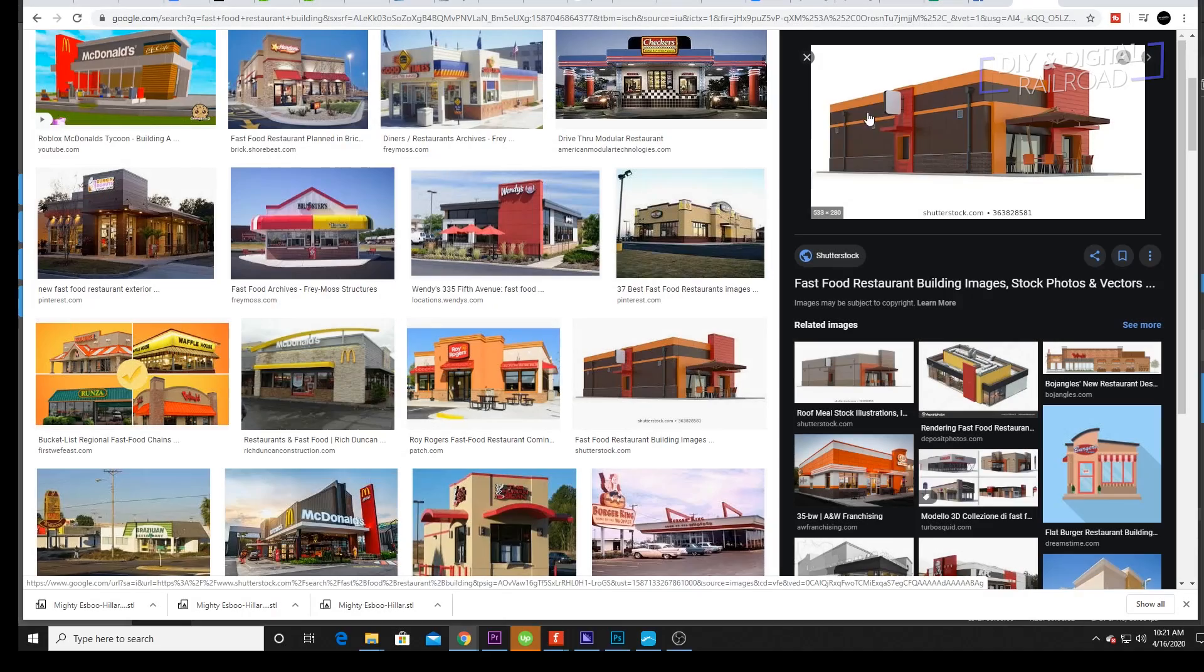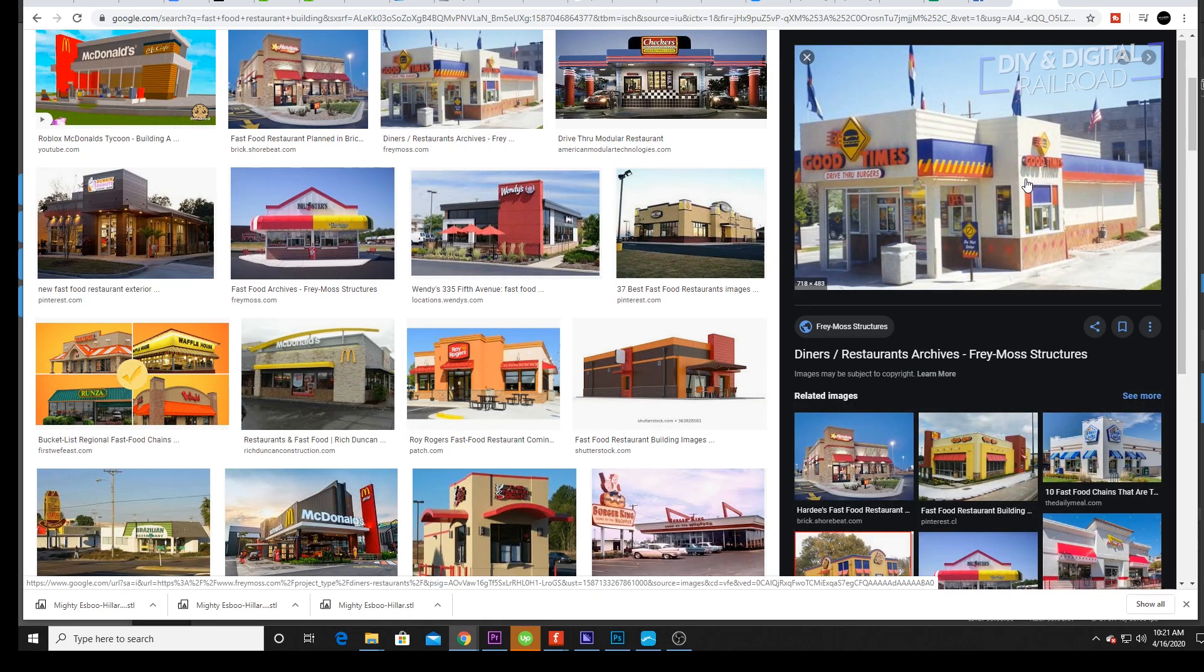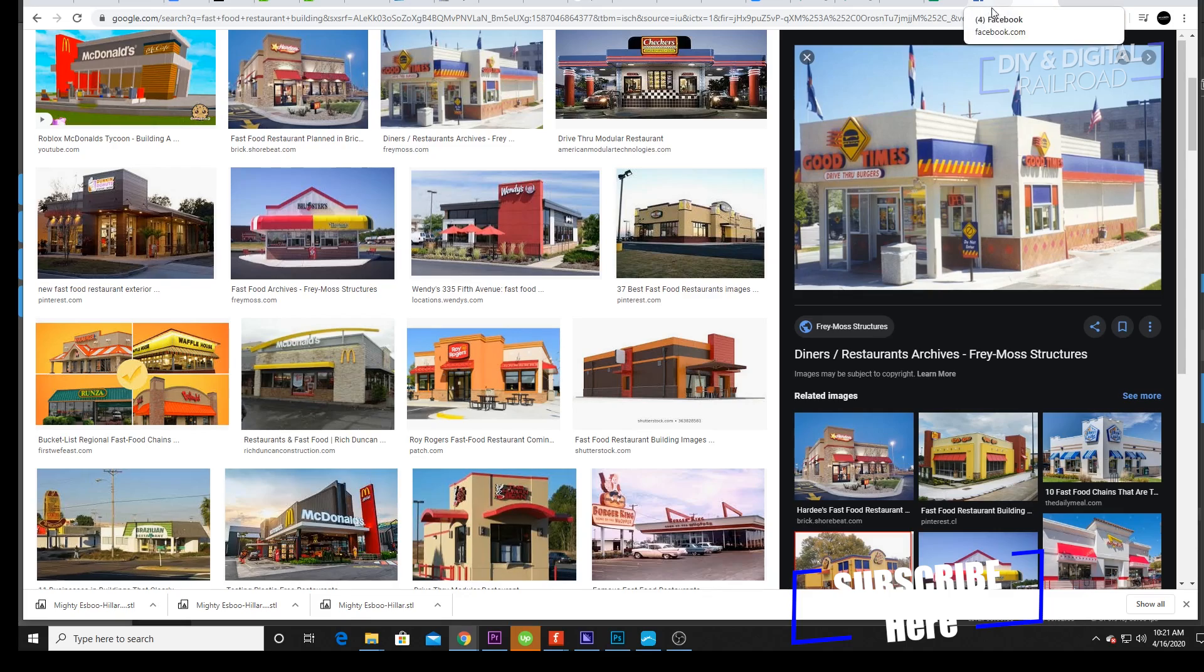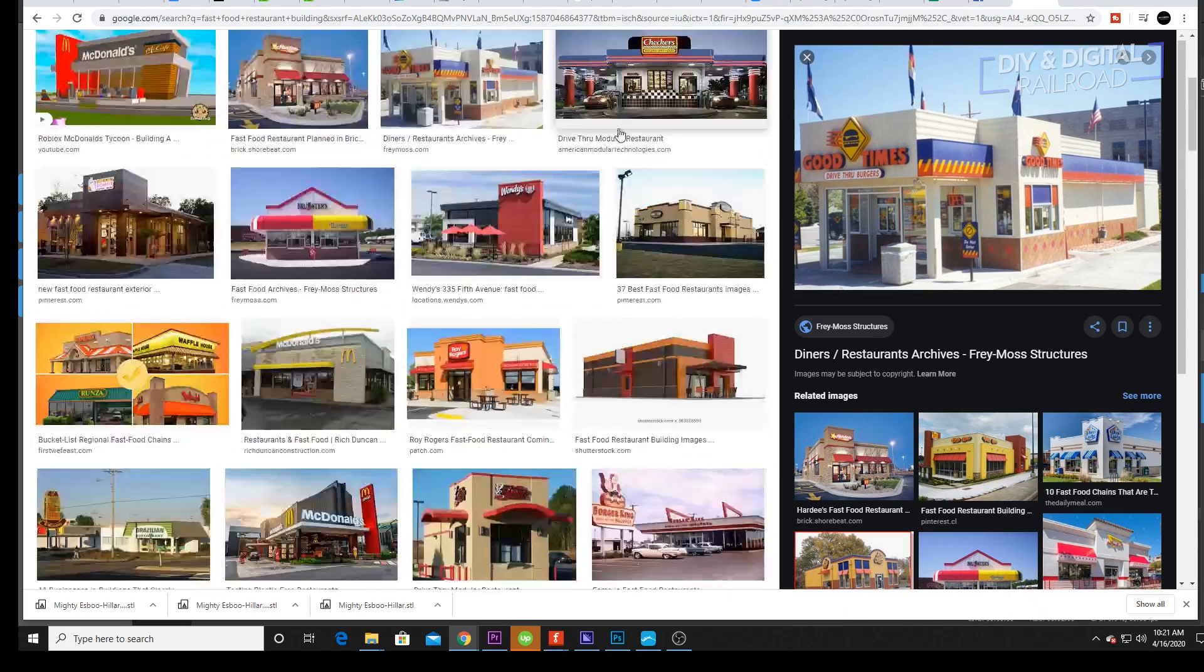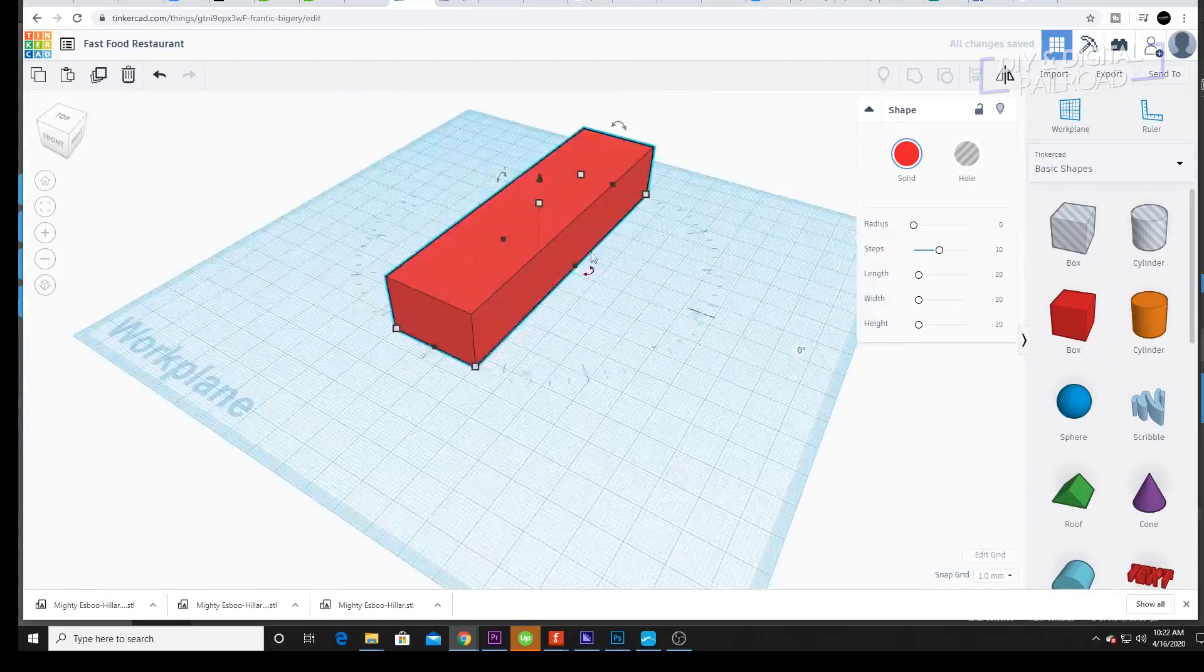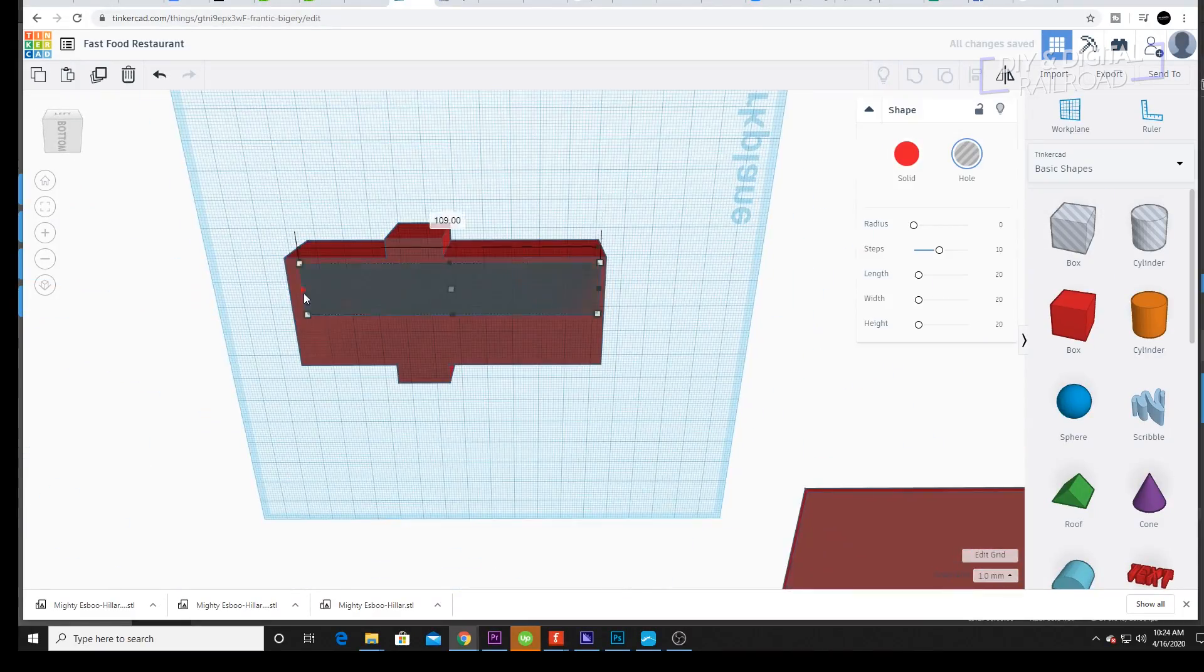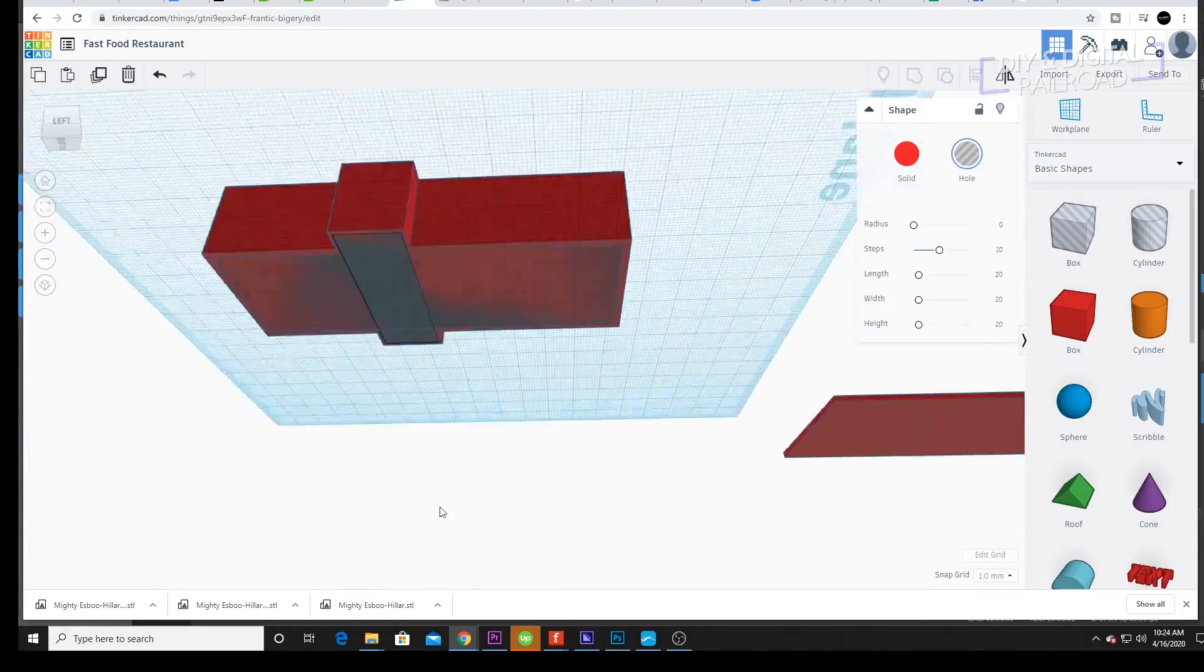So let's go ahead and hop into Tinkercad and design that fast food restaurant. I began the process by looking at Google images of various different fast food restaurants, just so I can get a general idea. I'm not going to be modeling any specific fast food restaurant, but I am going to be basing my design off of kind of an amalgamation. I then hopped into Tinkercad and began designing. Now, I will not be going through a full step-by-step process because it took me nearly an hour of doing this modeling to get to the point where I was ready to print.